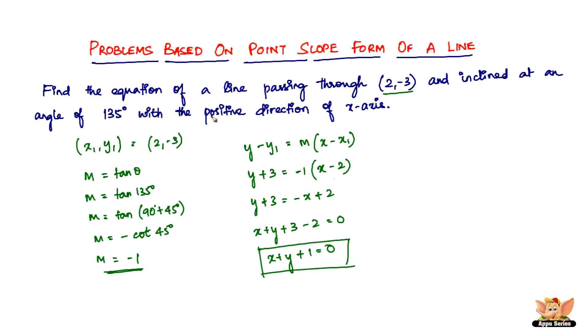Let me quickly review this problem. We have x₁, y₁ directly given, but not the slope. We have the angle at which the line is inclined with the positive direction of the x-axis, so we use m = tan θ to find the slope.